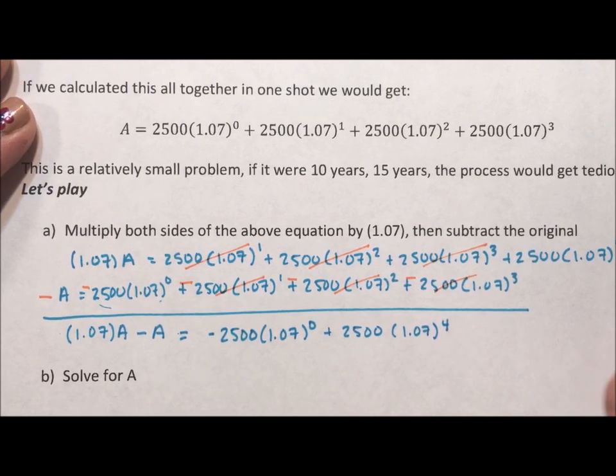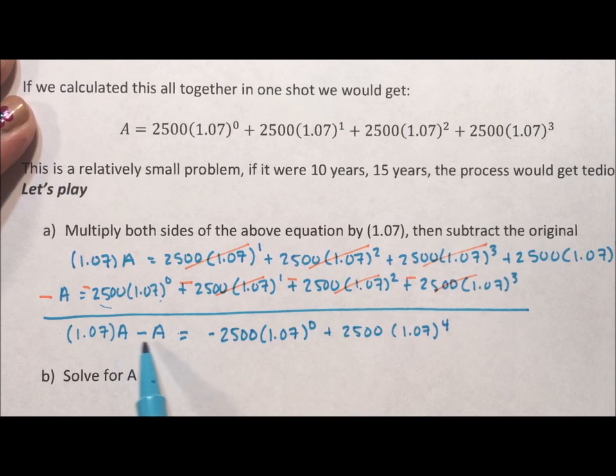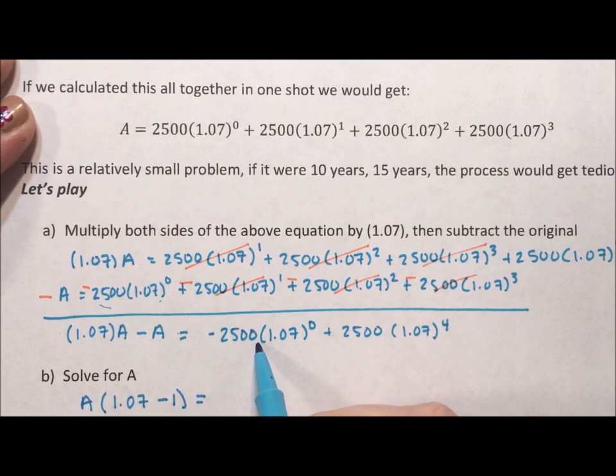Okay. Now it says solve for A. I'm going to clean this up a little bit. The first thing I'm going to do is I'm going to factor the A out of this. So I'm going to say A times 1.07 minus 1. Anything to the power of 0 is 1. So this is really 2,500 times 1. So I have, I'm going to switch these two terms around.